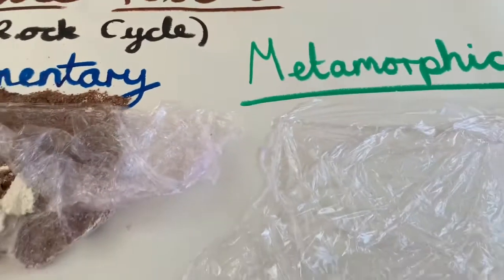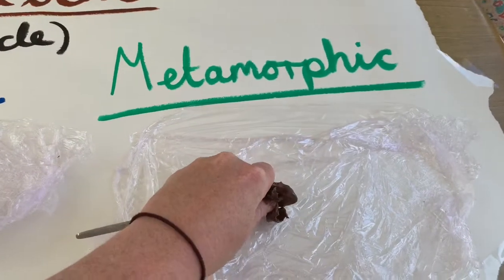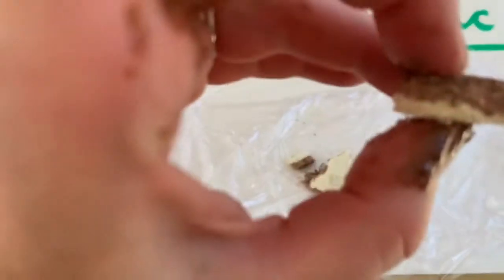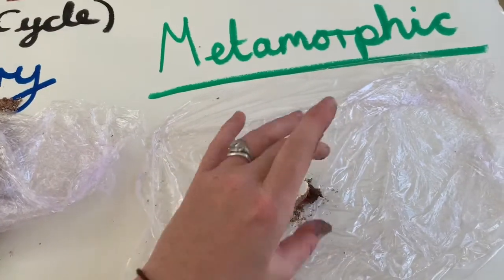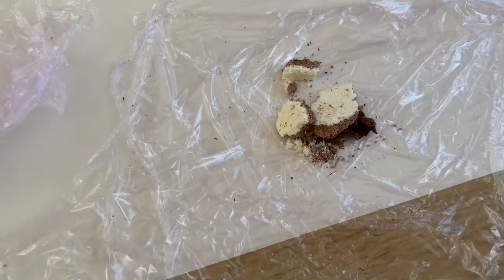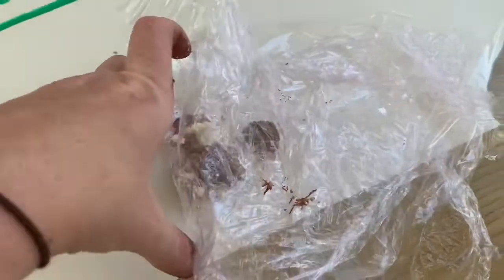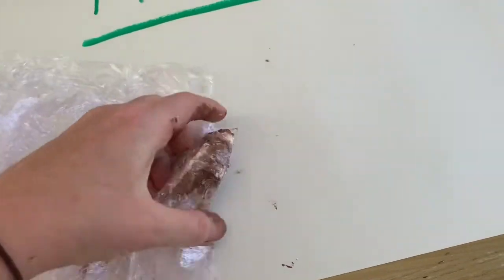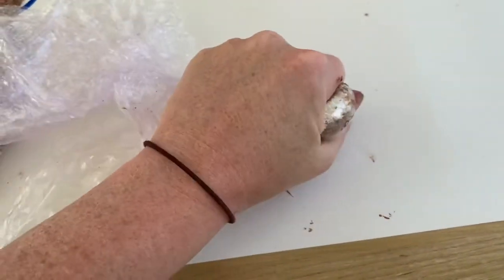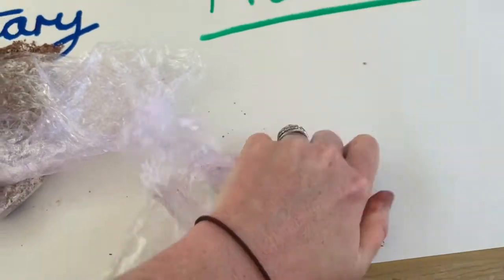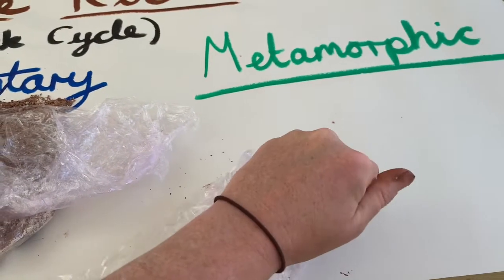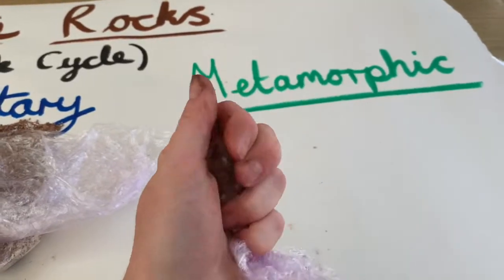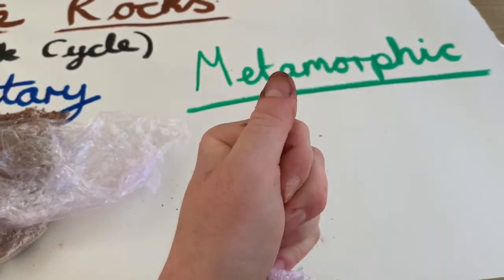Now, the final rock we're going to make is metamorphic. We have some of our igneous rock here, and we also have some of our sedimentary rock — you can see the layers, the sediment has built up. We've got some igneous rock and some sedimentary rock in our cling film. What I'm going to do is make it into a little ball so I can hold it in my hand. Here is my metamorphic rock that I'm creating in my hand. I'm applying pressure, which means I'm squeezing it, just like the plates of the earth would do to rock.